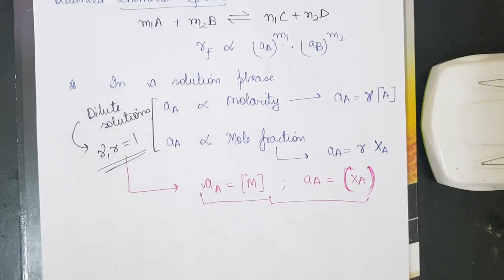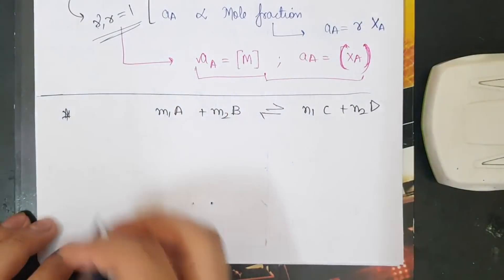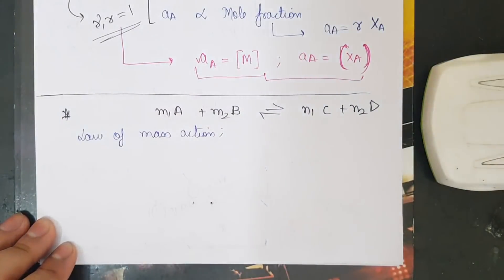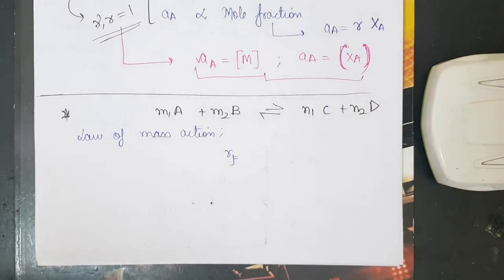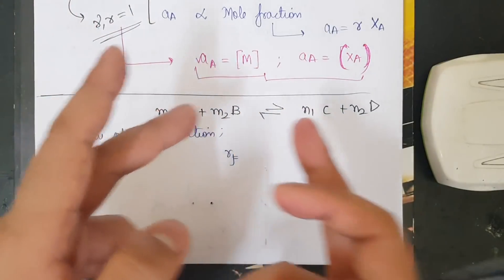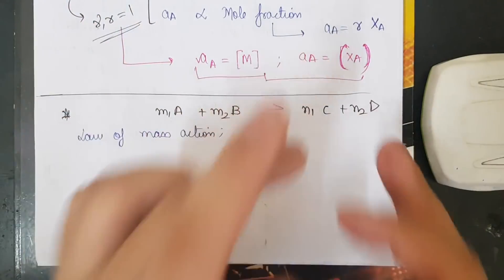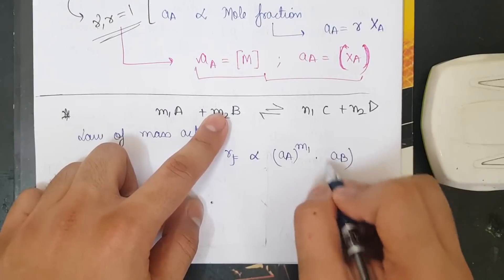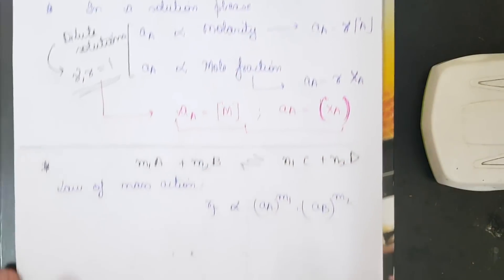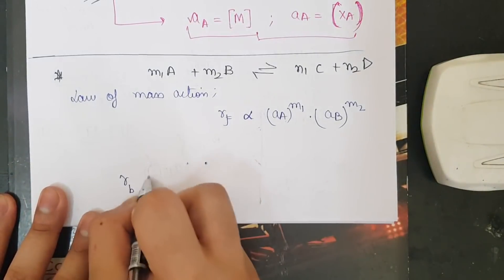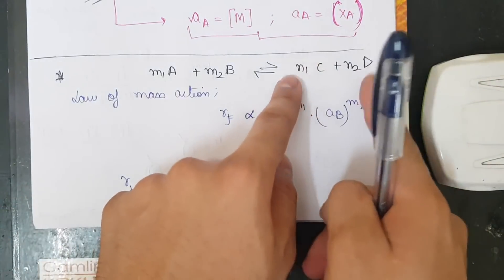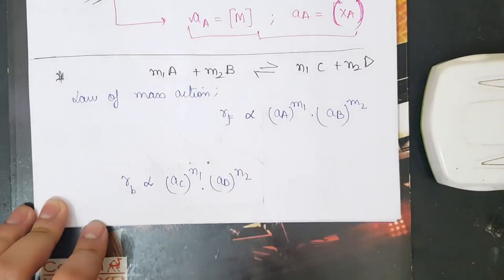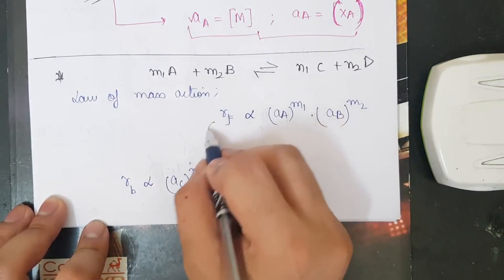Now let us derive the value of Kc. For the general reaction m1A + m2B ⇌ n1C + n2D, we apply the Law of Mass Action. The rate of the forward reaction Rf is proportional to [A]^m1 × [B]^m2. The rate of the backward reaction Rb is proportional to [C]^n1 × [D]^n2.